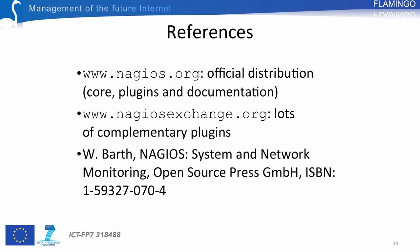Here are some important references if you want to investigate Nagios further. The first is the official Nagios website, www.nagios.org, where you can download the official distribution, get plugins and documentation. A second reference is the Nagios community website where you can find many complementary plugins. A last important reference is the book by Wolfgang Barth entitled 'Nagios System and Network Monitoring' — the main reference book for Nagios.